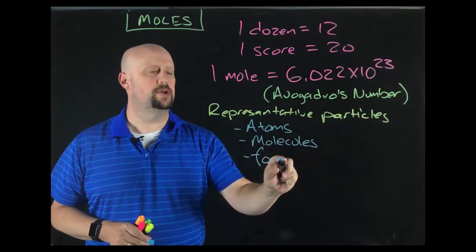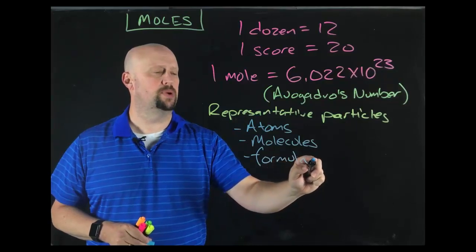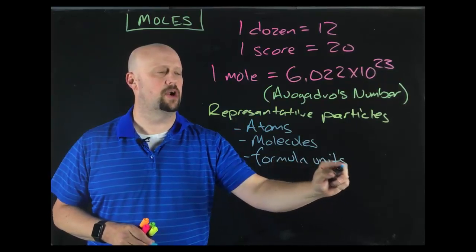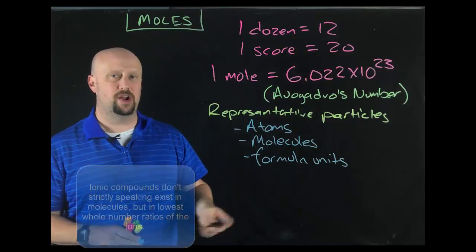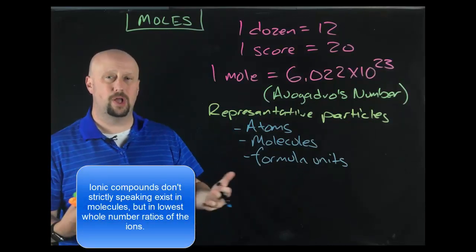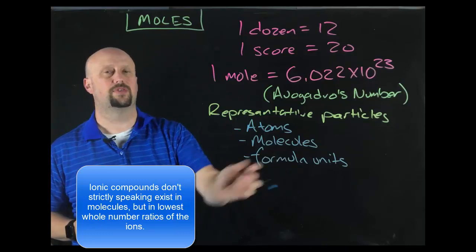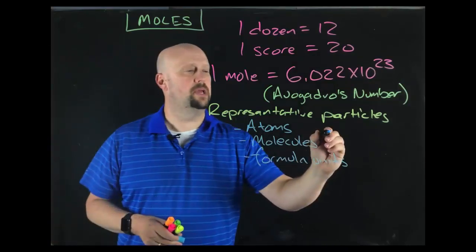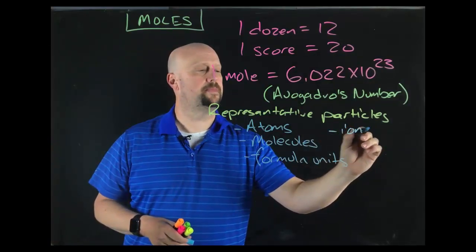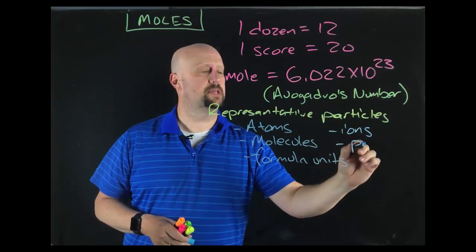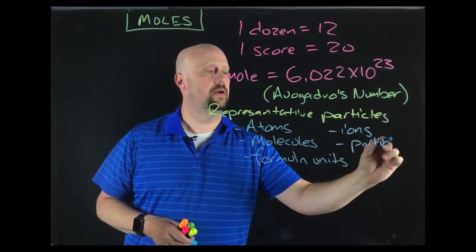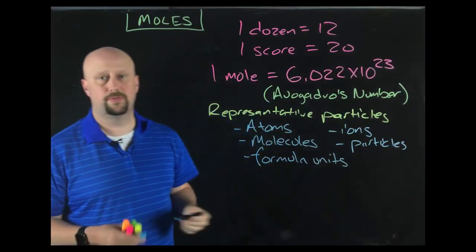We could also do formula units. And at this point in the year, we don't really know what formula units are. But essentially, they're molecules for ionic compounds. Ionic compounds don't really have molecules. They have a lowest whole number ratio, and we call those formula units. It could be ions. Or we might just sometimes just say particles.